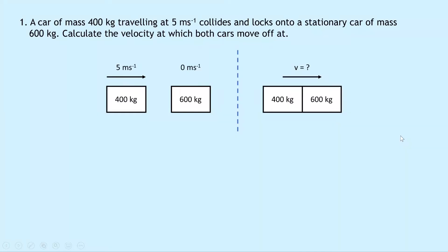So let's get started. Question one says a car of mass 400 kilograms traveling at 5 meters per second collides and locks onto a stationary car of mass 600 kilograms. Calculate the velocity at which both cars move off. They've given us a diagram of the situation with before the collision on the left and after the collision on the right.